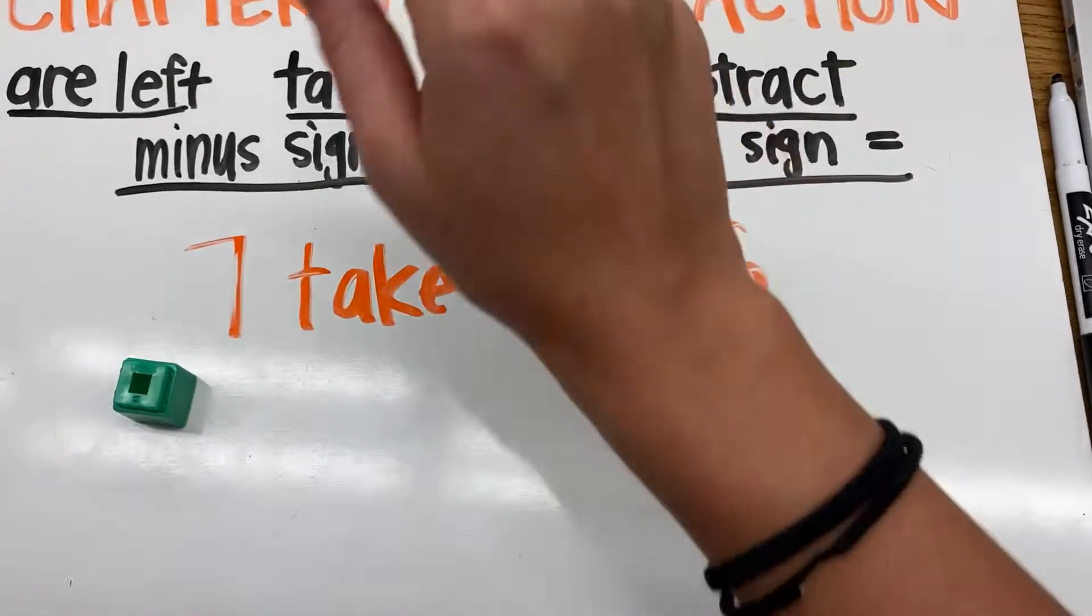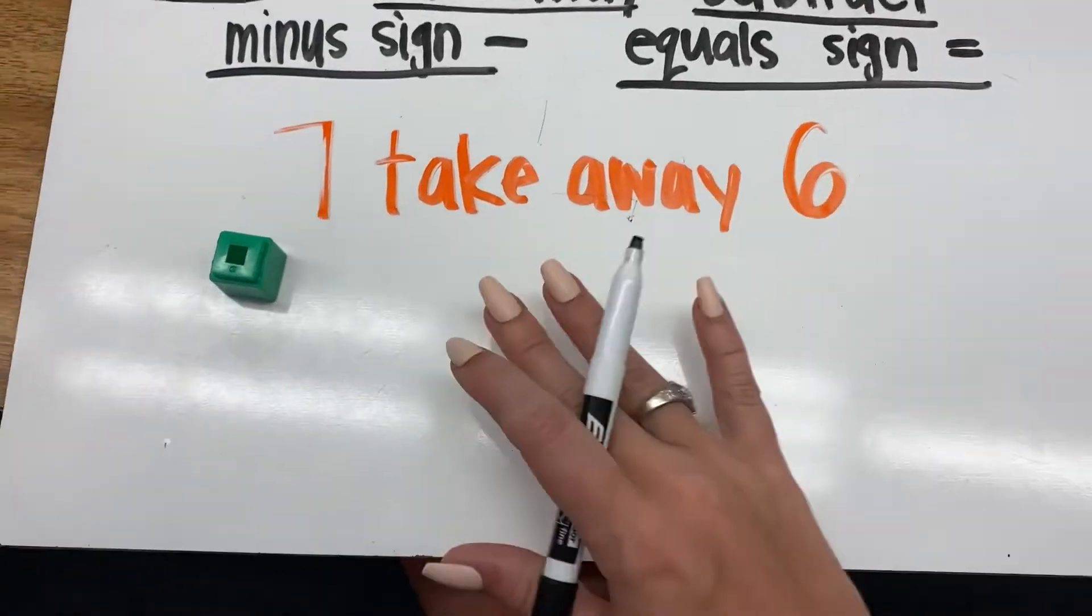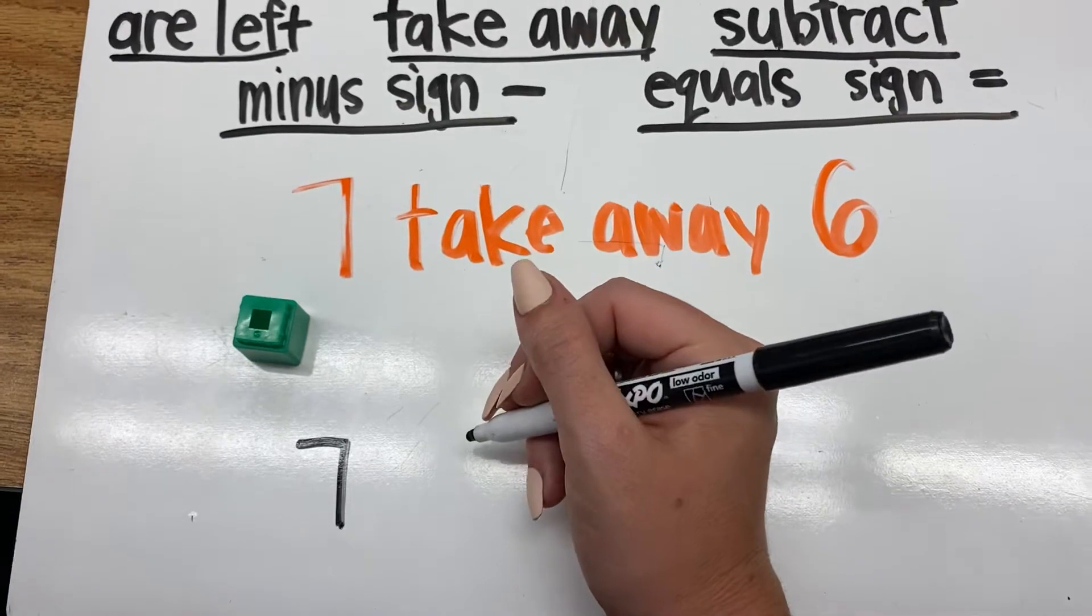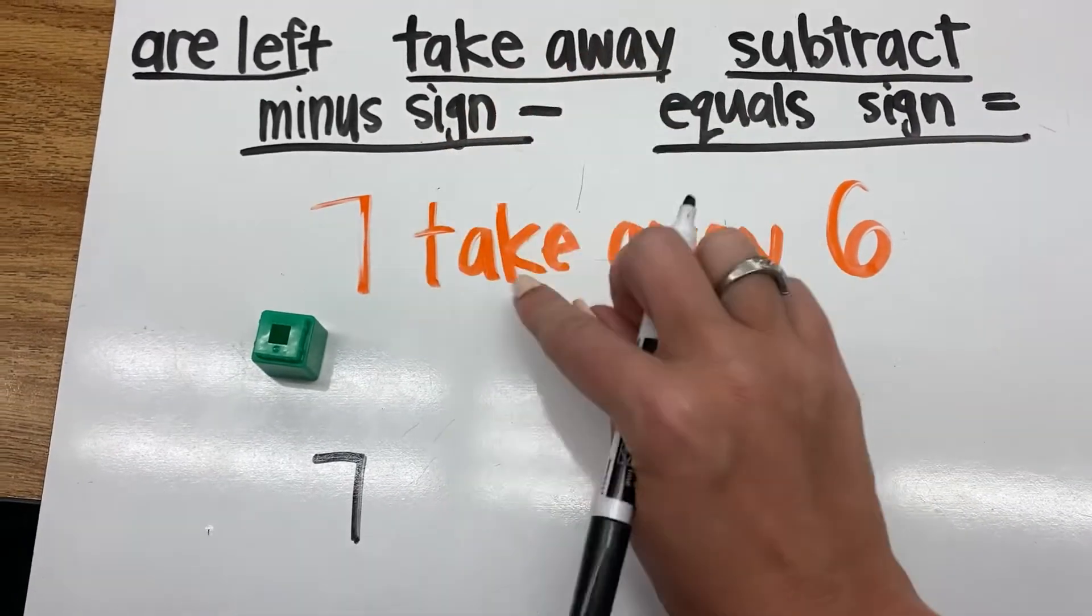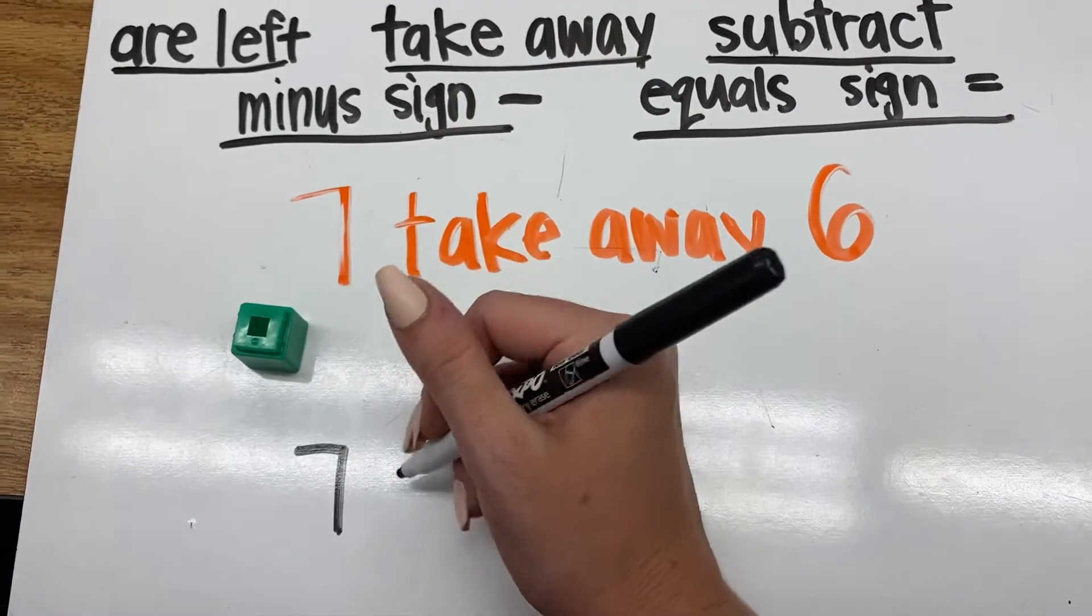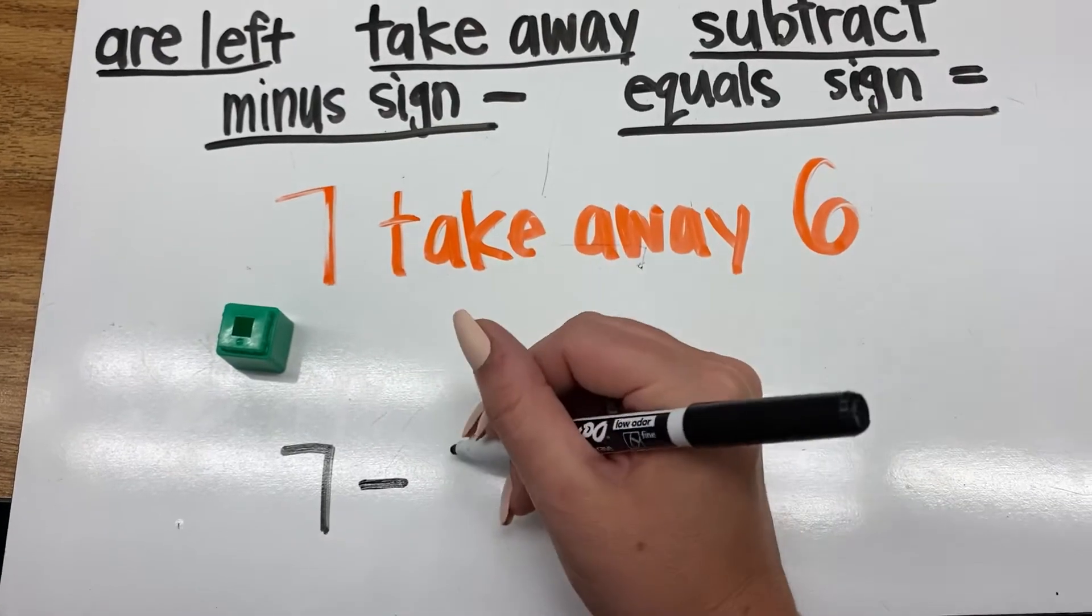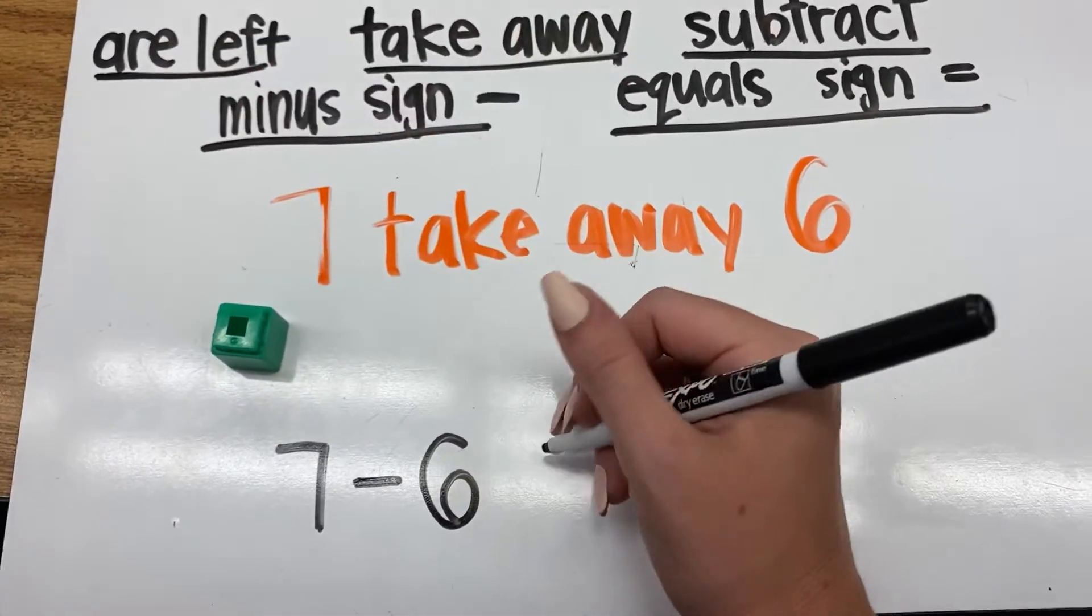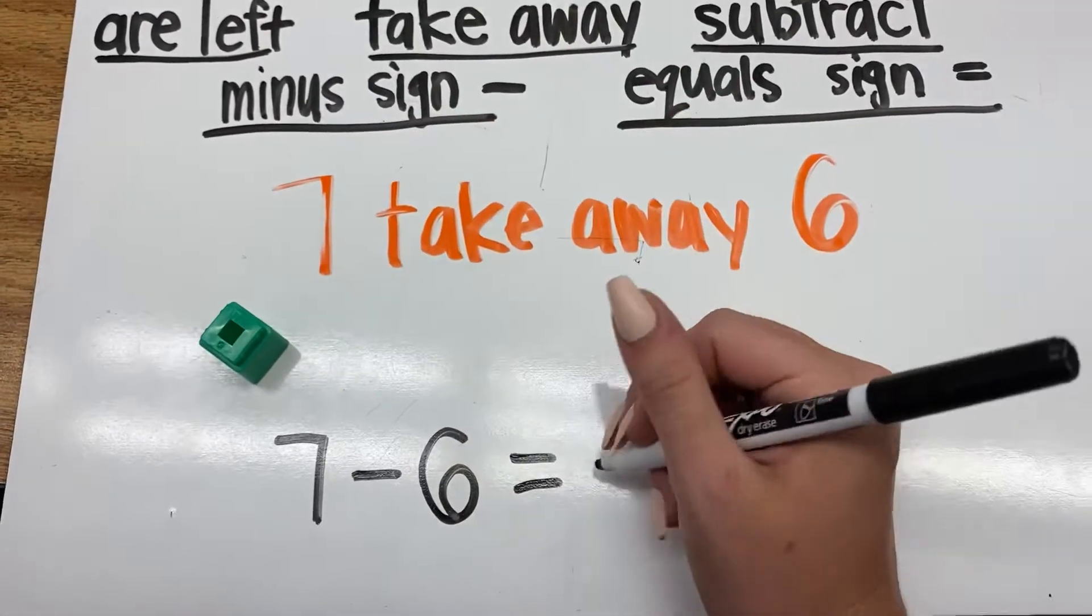So if we want to take that and put it into a subtraction sentence down at the bottom, we start with seven. So we're going to go seven, take away, which is also our minus sign. Our minus sign means we take away. Okay, so seven, take away six equals, that's going to tell me how many are left, equals one.